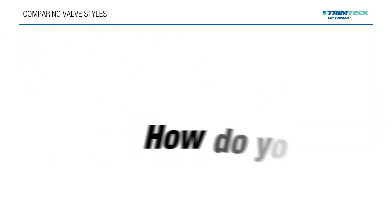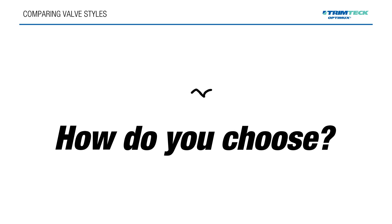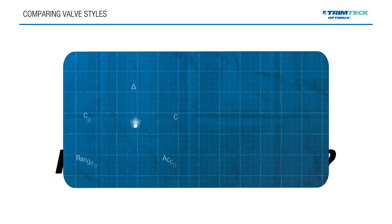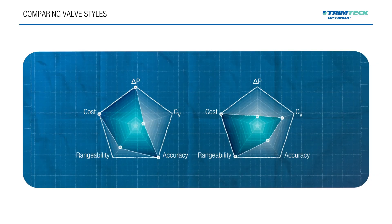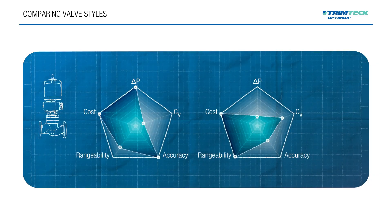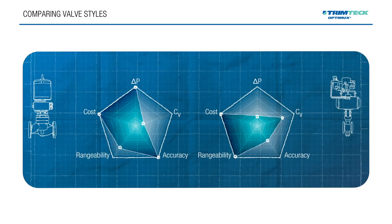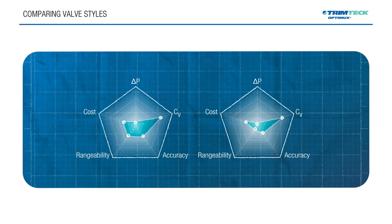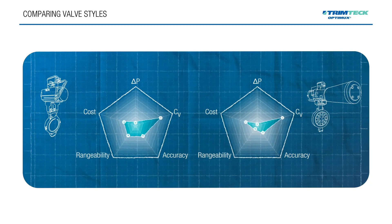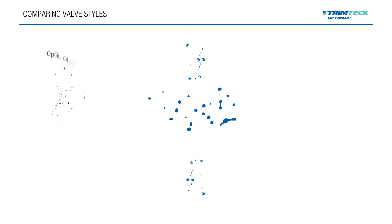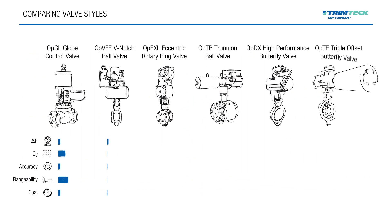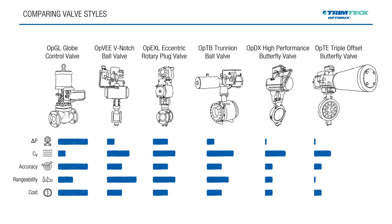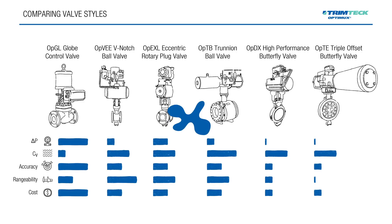So how do you choose? It all depends on your application. Need high accuracy, wide rangeability, and tight shutoff? A globe or V-notch ball valve may be your best bet. Looking for a compact economical solution for high flow rates? A butterfly valve might be ideal. The key is to match the valve's capabilities to your process needs and always validate your selection using accurate sizing and spec tools.